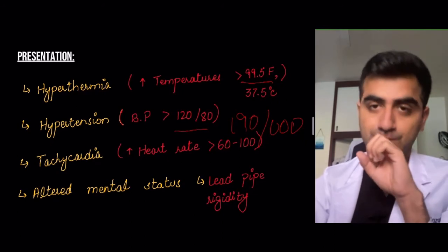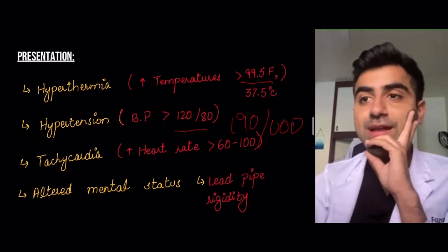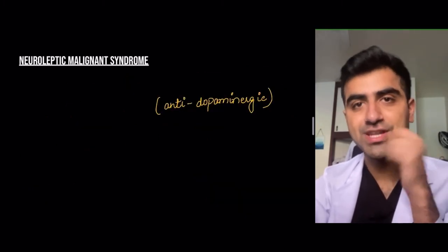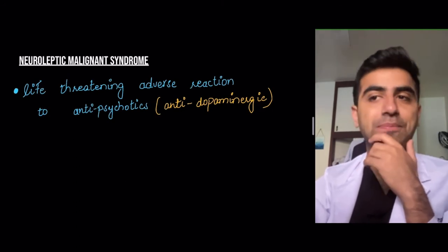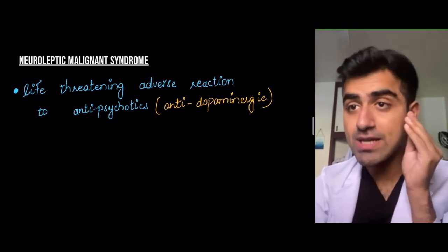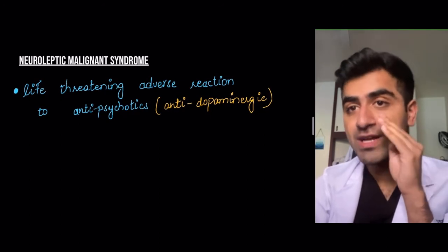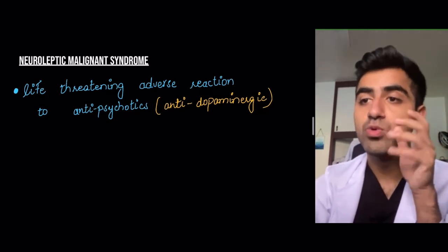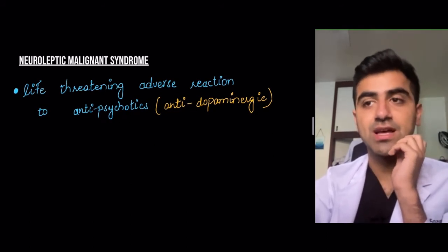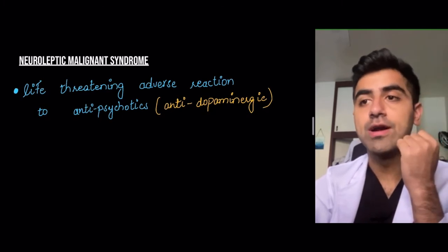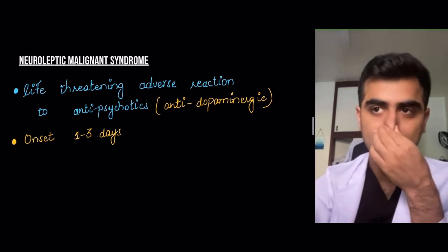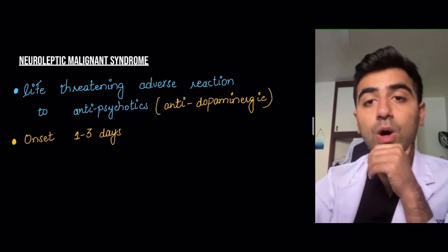Altered mental status — she had confusion — and lead pipe rigidity. All of these findings are pathognomonic for neuroleptic malignant syndrome. Our patient had all of these findings, so we are thinking in terms of NMS. Neuroleptic malignant syndrome is a life-threatening adverse reaction to antipsychotics, or basically anti-dopaminergic drugs. Antipsychotics are the most commonly used anti-dopaminergic drugs, but others include domperidone and metoclopramide.